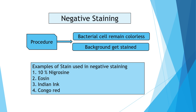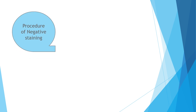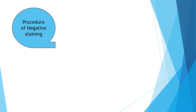Now let's see the examples of stains that are used in negative staining technique. The examples are: 10% nigrosin, eosin, India ink, and Congo red. Let's start with the staining procedure of negative staining.